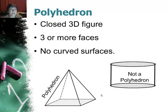Now a polyhedron is a special type of 3D solid. It only has faces that are polygons. So it's composed completely of faces. There are no curved surfaces and there are at least three or more faces to make it.